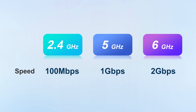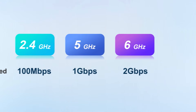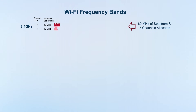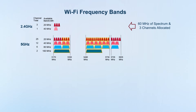However, these are not fixed values. In actual applications, the speed is often affected by interference. In addition, the spectrum width and channel will also affect the transmission speed.